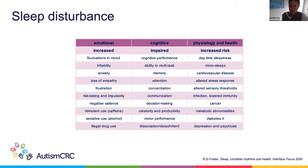It's these sorts of pathologies and presentations associated with disturbed sleep that underlie the importance of maximizing the likelihood of a good night's sleep, and that's what we're hoping to achieve for children on the autism spectrum through this research.